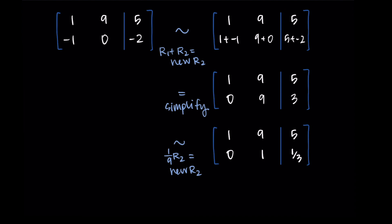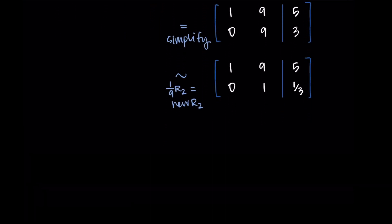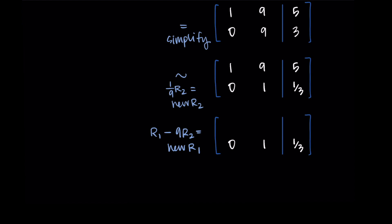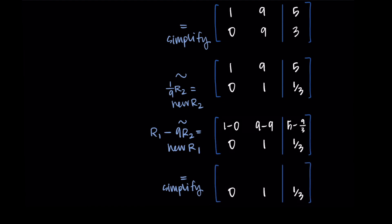Now to reach reduced row echelon form, I need to eliminate the 9 in row 1, column 2. I replace row 1 with row 1 minus 9 times row 2: [1 - 0, 9 - 9, 5 - 9·(1/3)] = [1, 0, 5 - 3] = [1, 0, 2]. So my reduced row echelon form is [[1, 0, 2], [0, 1, 1/3]].